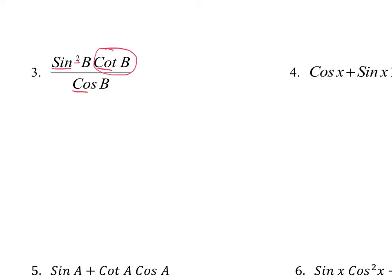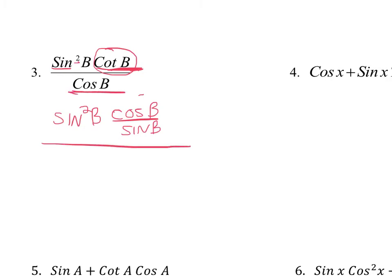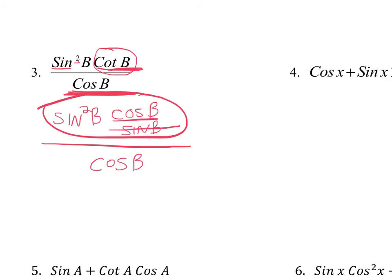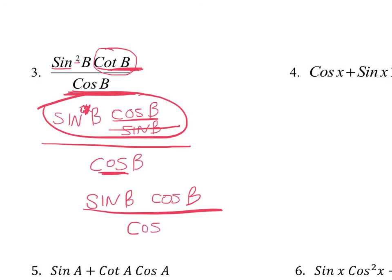Sine squared and cosine will stay the same. So you're going to have sine squared of b. This cotangent changes to cosine of b over sine of b. And then this is all over the cosine. It gets a little messy with the fractions, but if I focus on the top, I can see this sine can cross-cancel with one of these sines in sine squared. So the numerator is just left with sine of b times cosine of b. And this is over cosine of b. So the cosines cancel, and you're just left with sine of b.